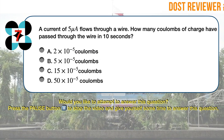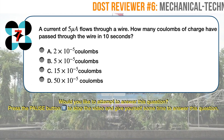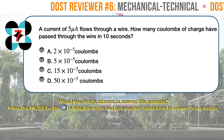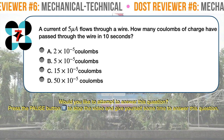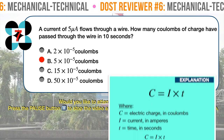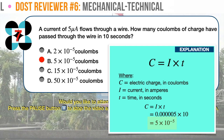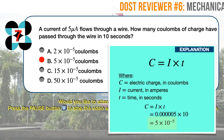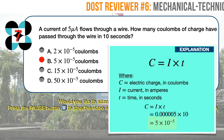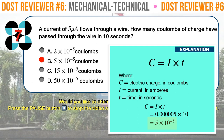Question number seven. A current of five microamperes flows through a wire. How many coulombs of charge have passed through the wire in 10 seconds? The correct answer is B: 5 times 10 raised to minus 5 coulombs. The coulomb (symbol C) is the unit of electric charge in the SI. It is equal to the electric charge delivered by a 1 ampere constant current in 1 second. In formula, number of coulombs equals current in amps times time in seconds. Make sure that current is expressed in amperes and time in seconds. Substituting: 0.00005 amperes times 10 seconds equals 5 times 10 raised to minus 5 coulombs.